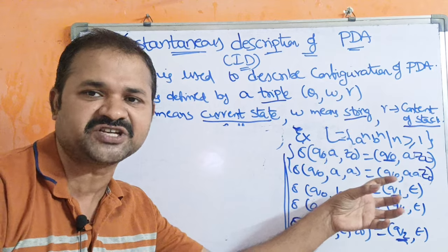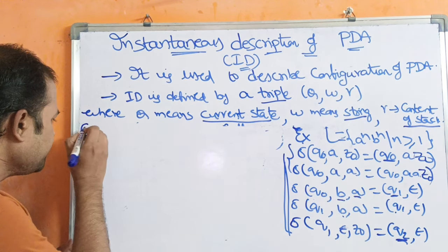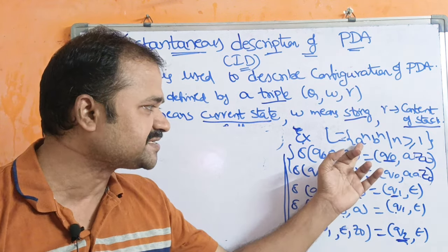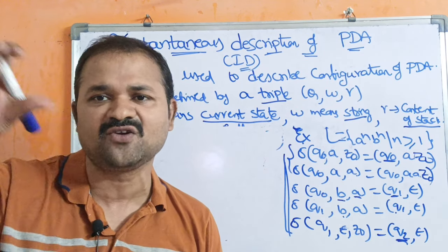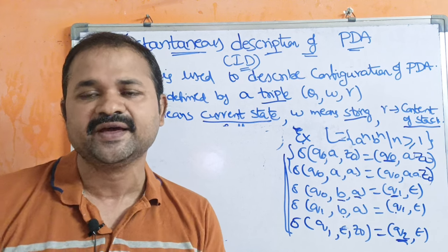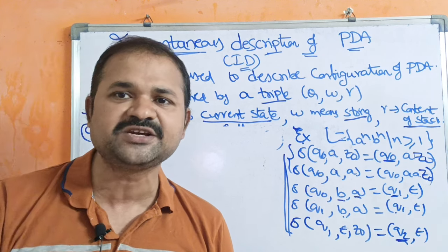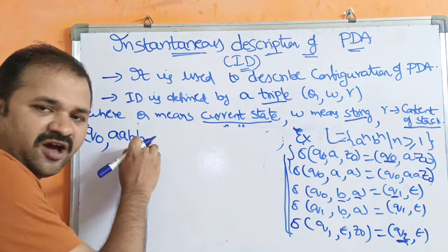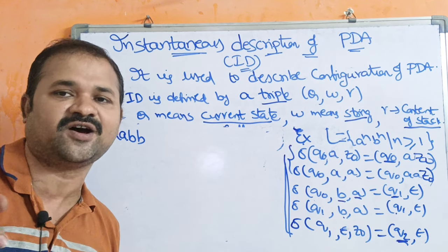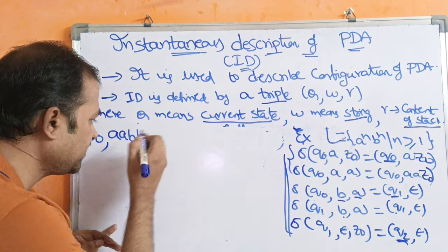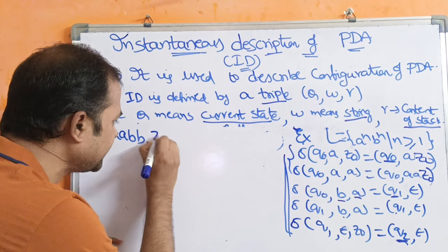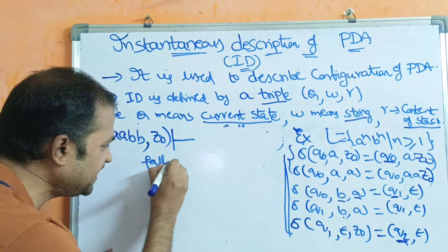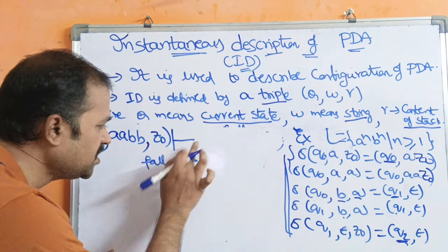By taking these transition functions, let us work with the instantaneous description now. ID is defined by a triple. Let the current state be Q0. The string is AB (for N=1, it is AB; for N=2, it is AABB). We write epsilon to denote the end of the string, and initially the stack is empty so we write Z0. The turnstile symbol specifies that we are performing a single move.